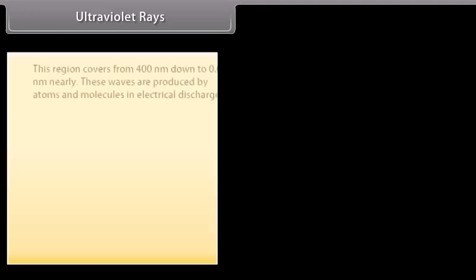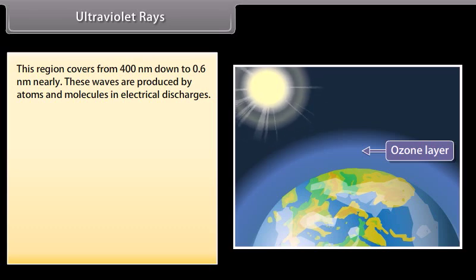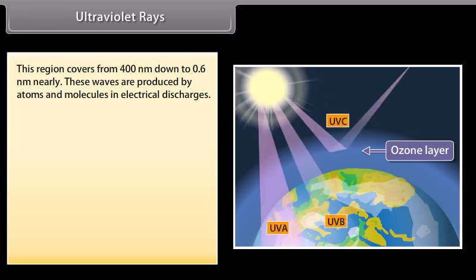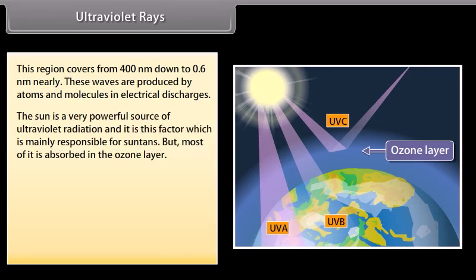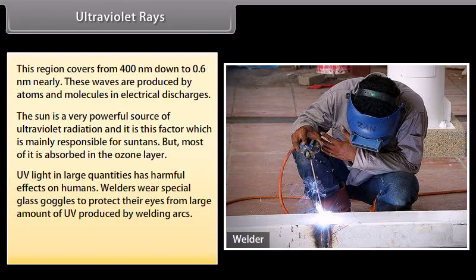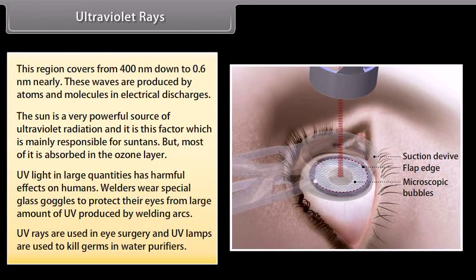Ultraviolet rays. This region covers from 400 nm down to 0.6 nm nearly. These waves are produced by atoms and molecules in electrical discharges. The sun is a very powerful source of ultraviolet radiation and it is this factor which is mainly responsible for suntans, but most of it is absorbed in the ozone layer. UV light in large quantities has harmful effects on humans. Welders wear special glass goggles to protect their eyes from large amount of UV produced by welding arcs. UV rays are used in eye surgery and UV lamps are used to kill germs in water purifiers.